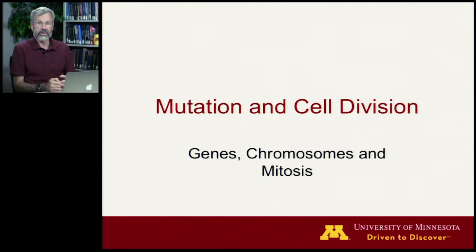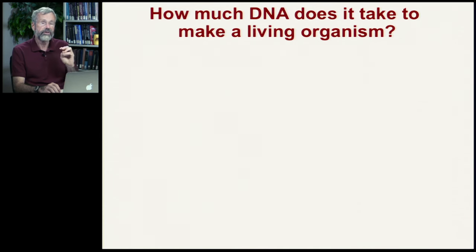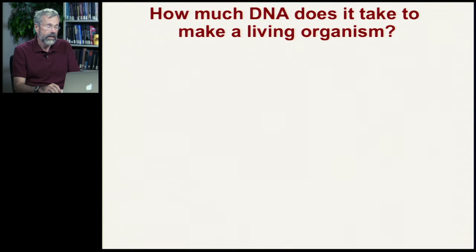Having seen the molecular basis of inheritance, today I want to focus on two things. First is that mistakes sometimes happen — these are called mutations. We also want to see how these chromosomes are passed on from one cell to another. First though, I just want to review something I mentioned briefly in the last lecture: how much DNA does it take to make a living organism.